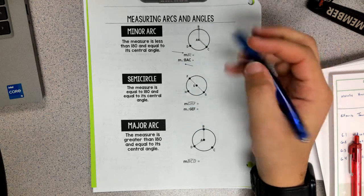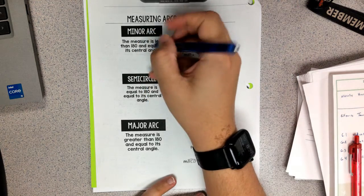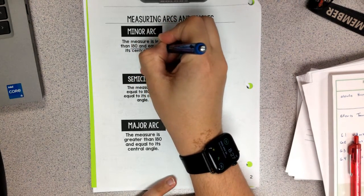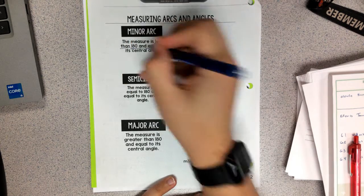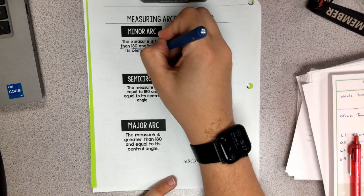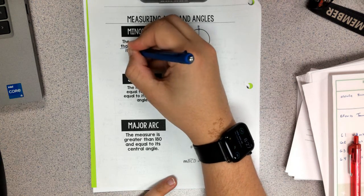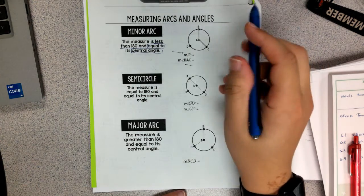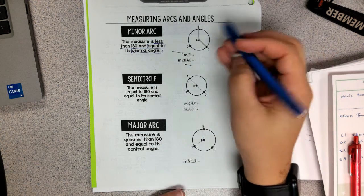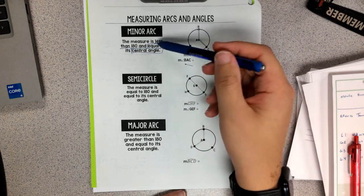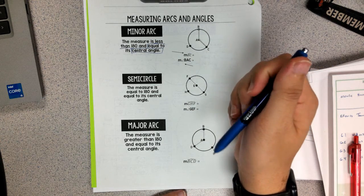Our minor arc is going to be any arc whose angle measure is less than 180 degrees. It's also going to be equal to the central angle. We're going to talk about all of that. So, a minor arc is less than 180 degrees, and it's going to be equal to its central angle.